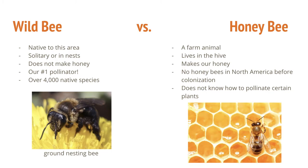Because of that, honeybees actually don't know how to pollinate certain plants — which raises the question, how do those plants get pollinated? Thus the wild bee. Wild bees are bees that are indigenous, native to this area. They have been here for thousands and thousands of years, and they have grown and evolved with specific plants that grow right in your area. Most of these bees aren't really making honey in the same way that a honeybee would, but they are our number one pollinator.